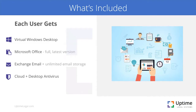Drilling down further, in most private clouds and certainly in Uptime Practice, each user gets their own virtual Windows desktop to log into and work from, gets Microsoft Office — the full and latest version — built into the cloud service, gets Exchange email with unlimited email storage, and gets antivirus both for the cloud environment and for the firm's local machines — desktops and laptops. The theme is that everything a law firm needs, soup to nuts, from hosting practice management software to Office to Outlook to Exchange to antivirus, is included in this package.